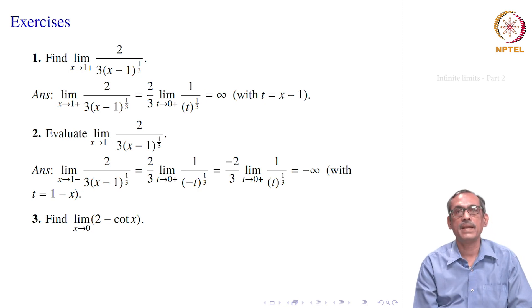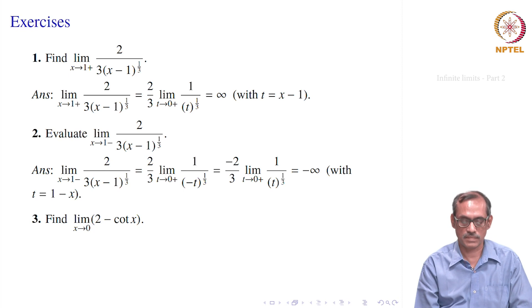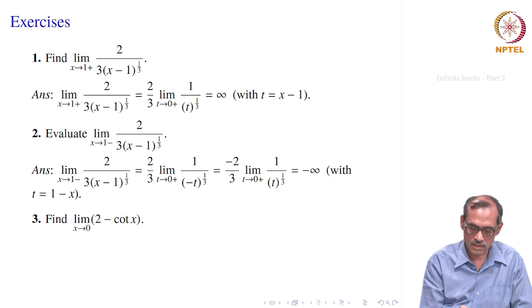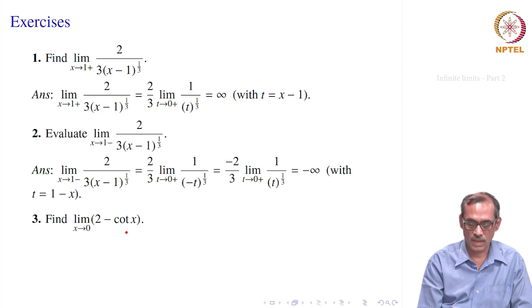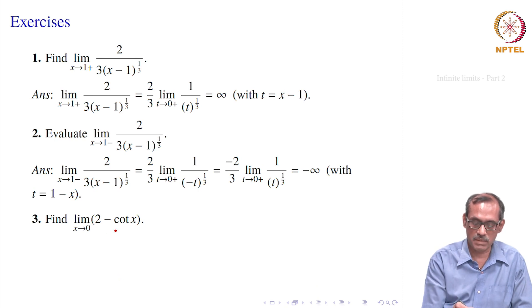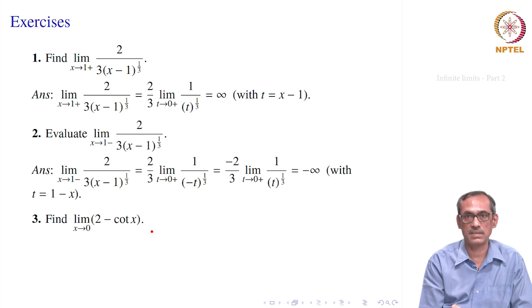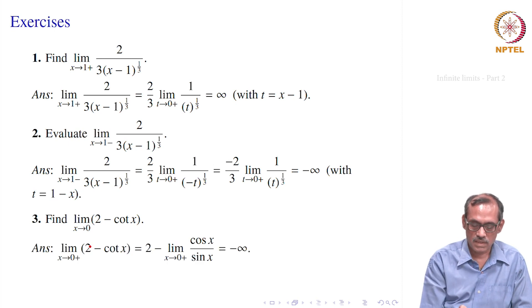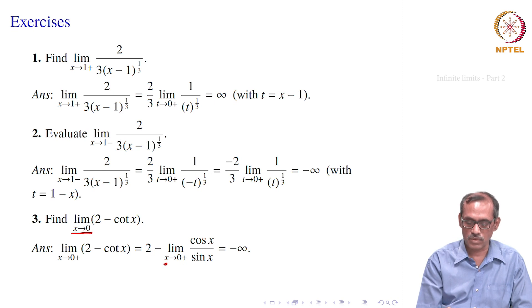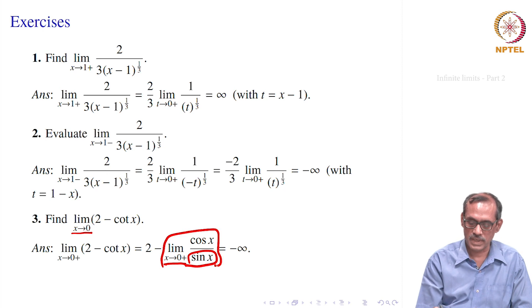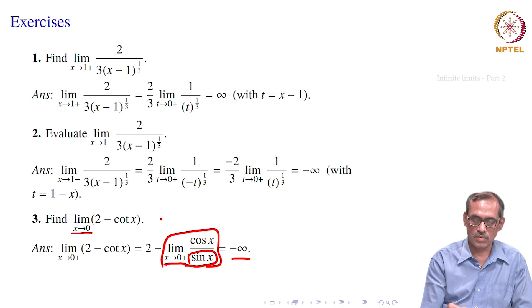The third problem: find the limit of 2 - cot(x) as x → 0. Here cot(x) = cos(x)/sin(x). Near 0, cos(x) stays near 1 but sin(x) approaches 0, so cot(x) might go to infinity. But sin(x) has different signs from the left and right. For x → 0+, x is positive and near 0, so sin(x) is positive and cos(x)/sin(x) → +∞, making 2 - cot(x) → -∞.